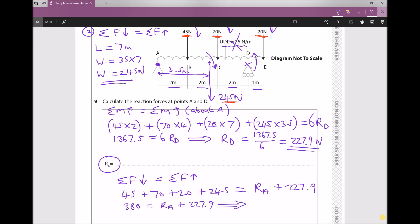Now our final step then, once again we've got a simple linear equation. All we need to do to get RA on its own is subtract 227.9 from each side. And we'll be left with RA = 152.1 newtons.